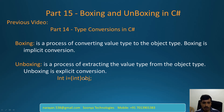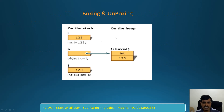Here, the object contains integer type. If you want to convert object type to integer type, we need to convert explicitly using parentheses. Inside parentheses, we need to mention integer type. If you want to convert to double, then inside parentheses we need to mention double. This diagram explains boxing and unboxing. Here, we have stack memory and heap memory.